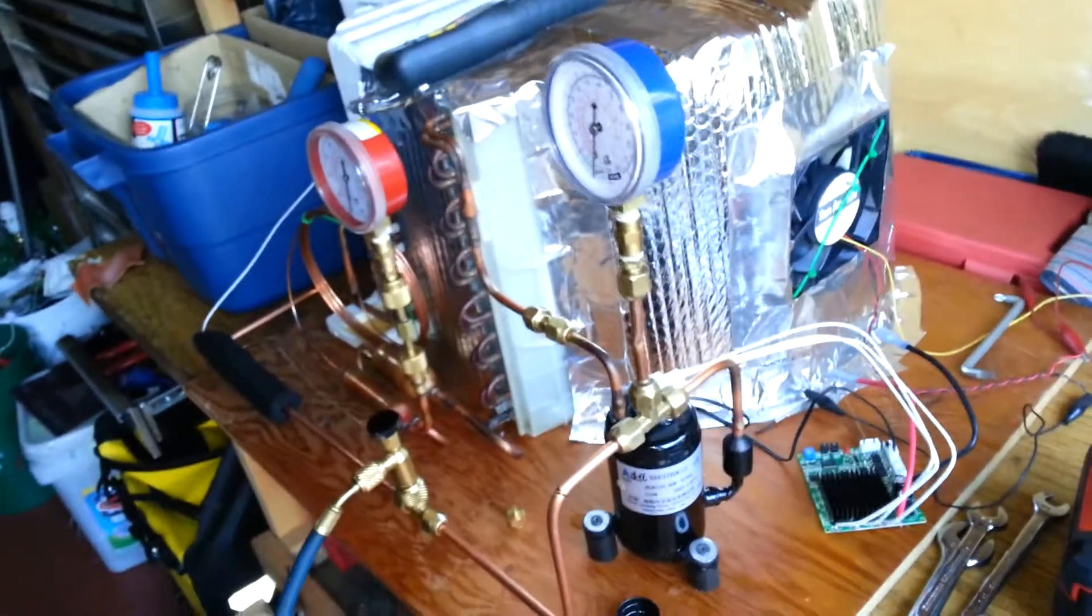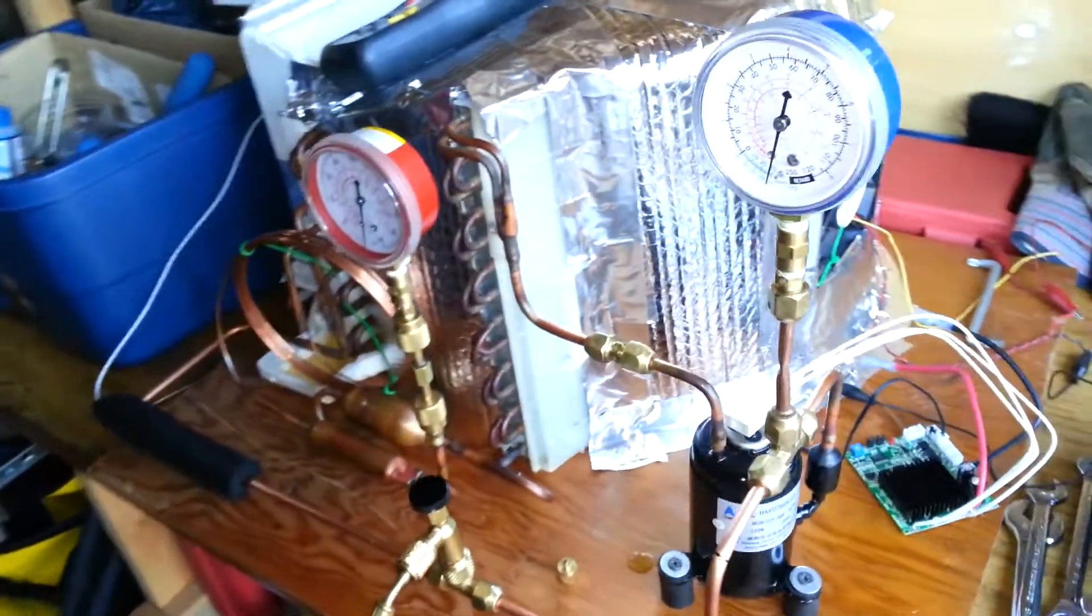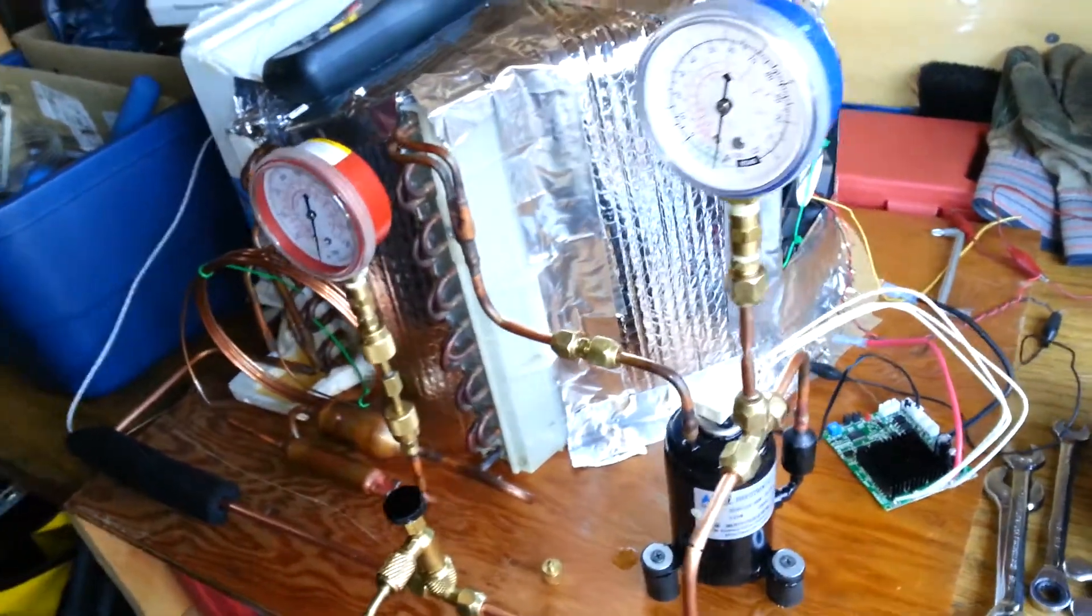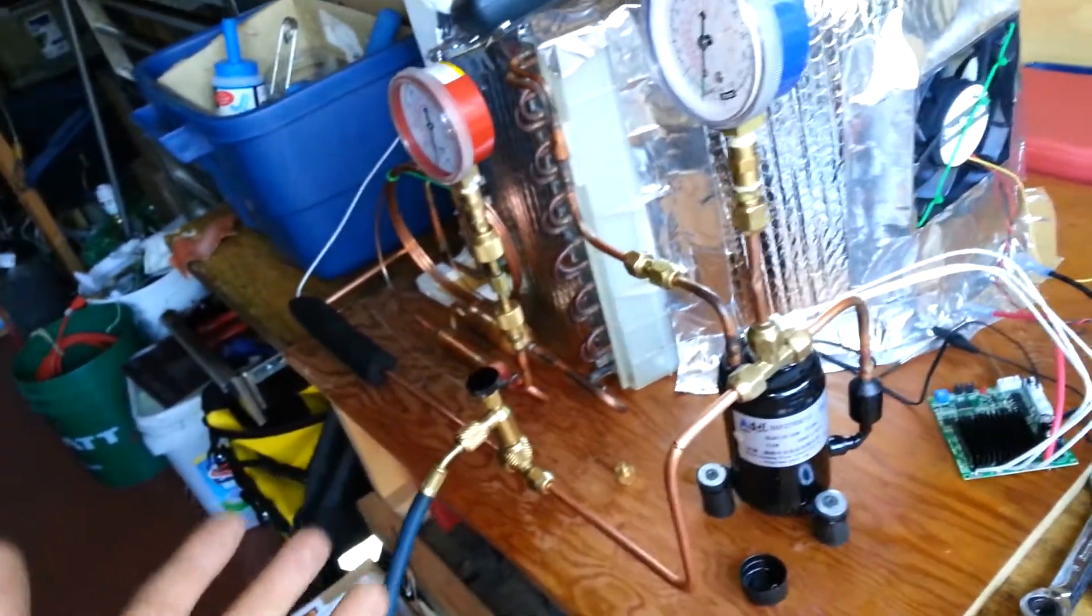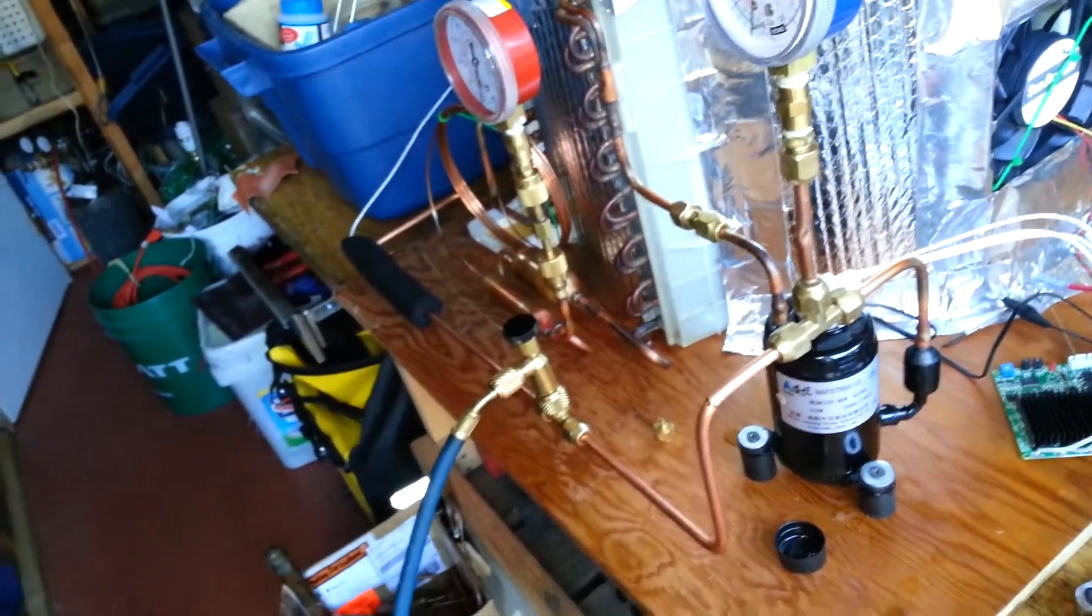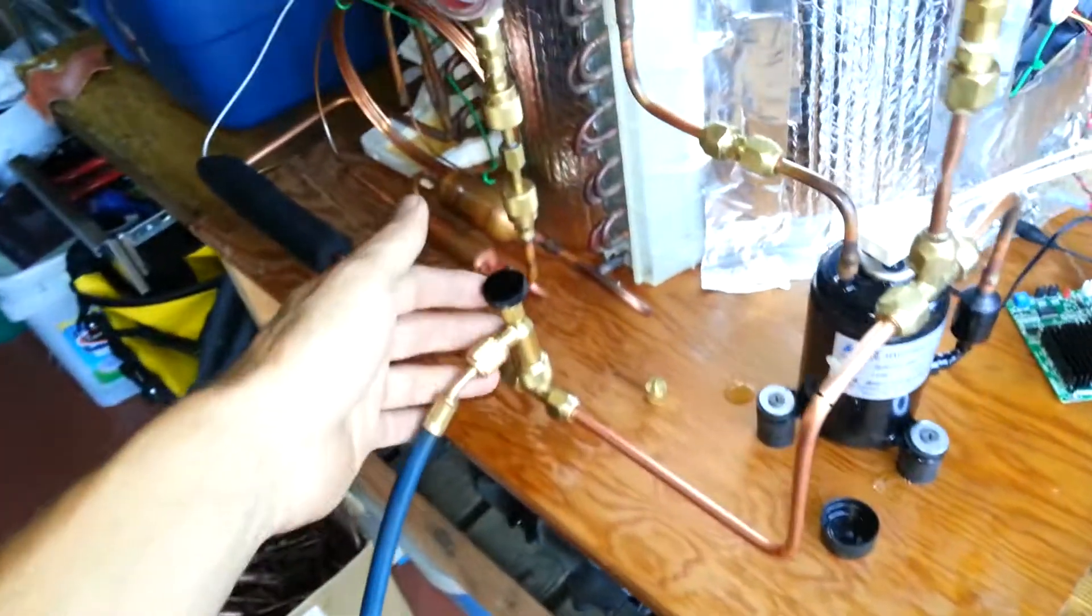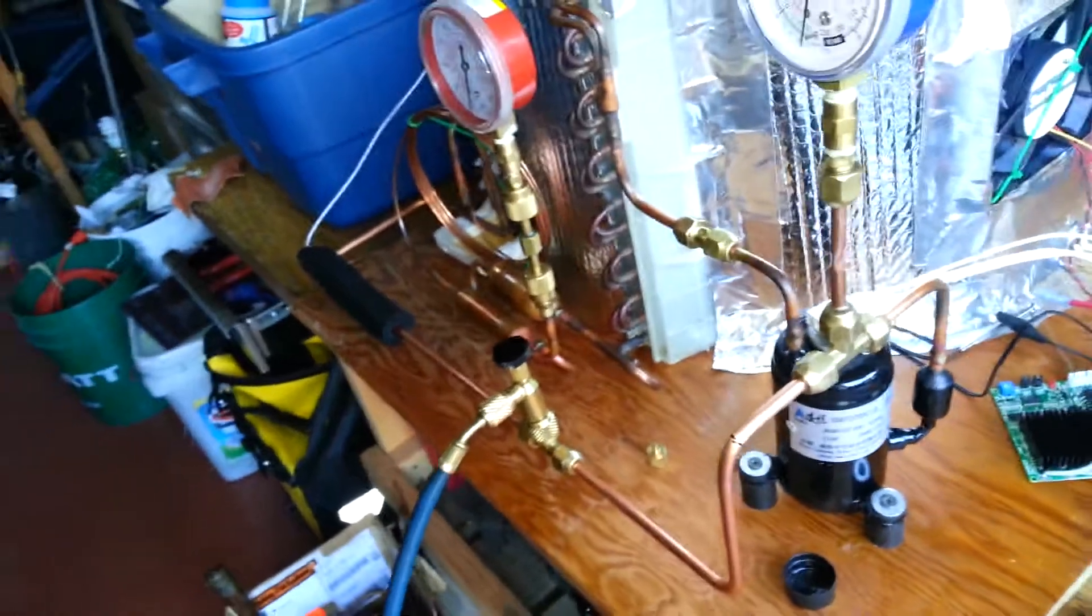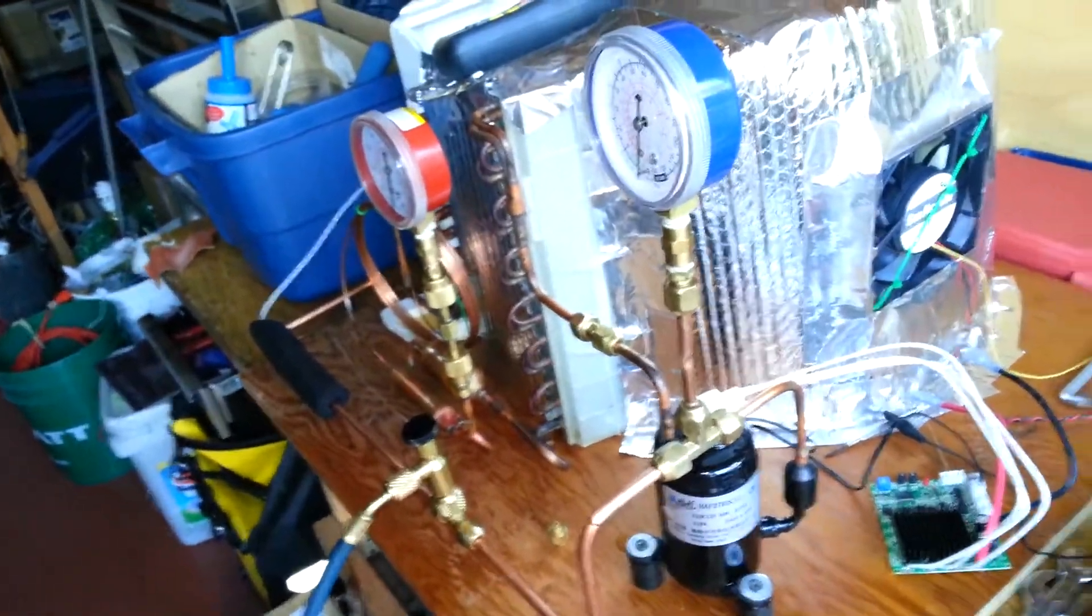I don't really need a manifold gauge set with this device. A few things you can do with a manifold gauge set that I can't do, but I have one if I want to use it. But I didn't see any reason to go through this gauge set when I'm ultimately going to have to go through a quarter-inch Schrader to evacuate the system.